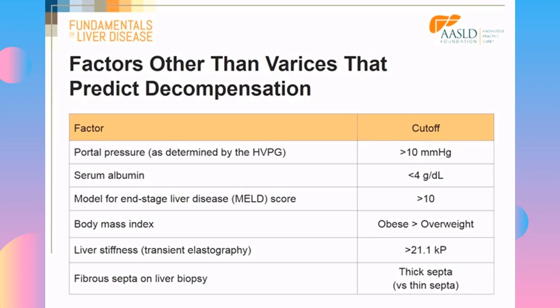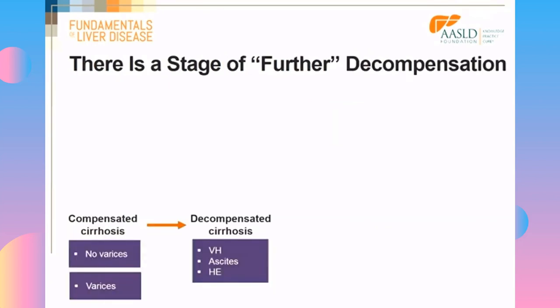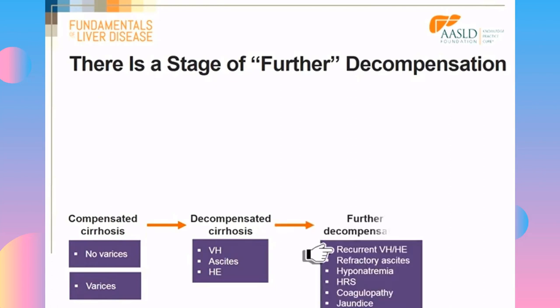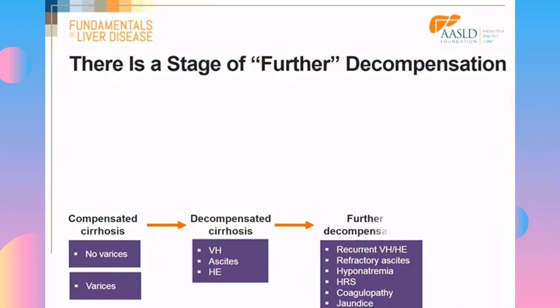In further decompensation, the patient not only has variceal hemorrhage, ascites, and encephalopathy, but now presents with recurrent variceal hemorrhage or recurrent encephalopathy, refractory ascites no longer responding to diuretics, hyponatremia, hepatorenal syndrome, coagulopathy, and jaundice. In many cases this is called acute-on-chronic liver failure, and these patients are near death.